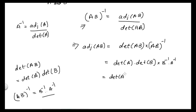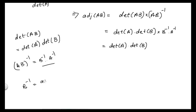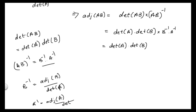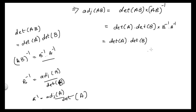From here I can write determinant of A times determinant of B. Now I can replace B inverse and A inverse by their formulae. We know that B inverse is equal to adjoint of B divided by determinant of B, and A inverse is equal to adjoint of A divided by determinant of A.